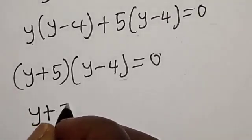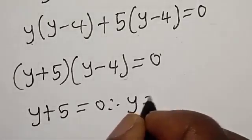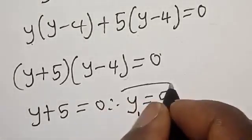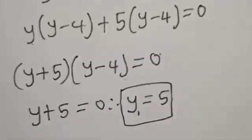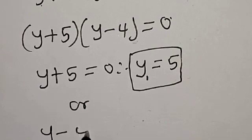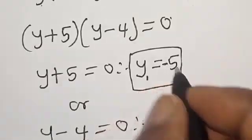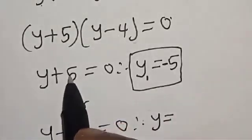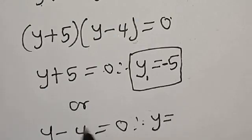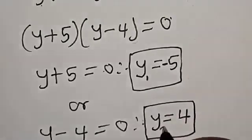Y plus 5 is equal to 0, therefore y is equal to 5. Let's call this y1. Or, y minus 4 is equal to 0, therefore y is equal to—sorry, this is minus 5. Because if this plus crosses the equal side it becomes minus. Here, y minus 4 is equal to 0, this minus 4 becomes 4. Let's call this y2.